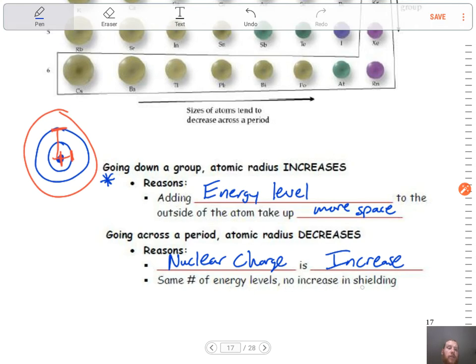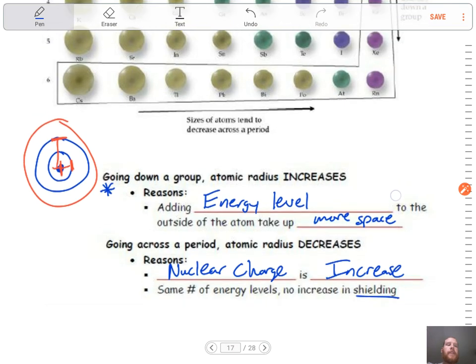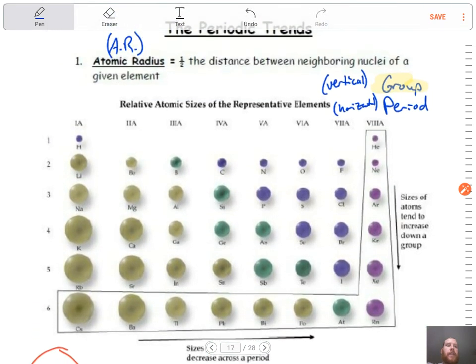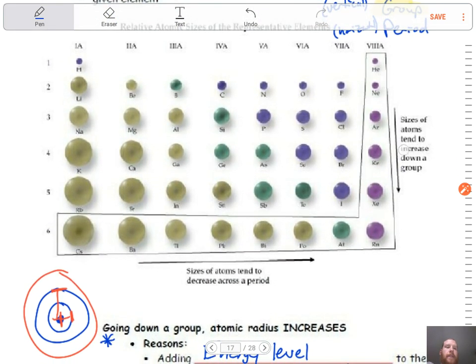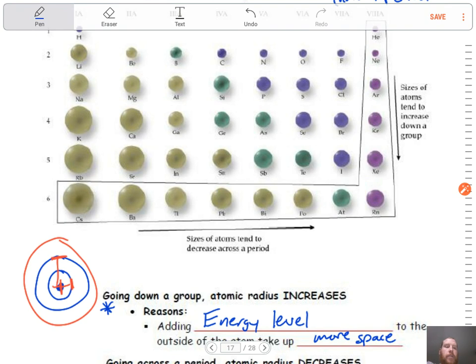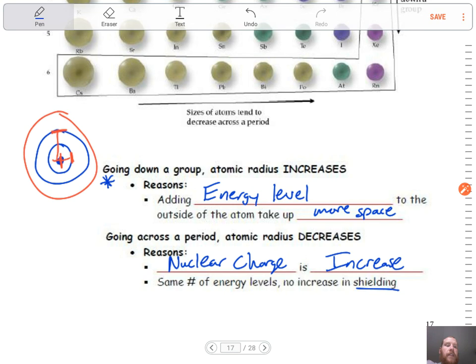You still have the same number of energy levels as you go from left to right, so there's no increase in the shielding. You still have a tighter or stronger pull on those outer electrons because you're not adding energy levels. So atomic radius, just to recap: as you go down a group, the atomic radius increases. As you go from left to right, it decreases. Down a group increase, left to right decrease.